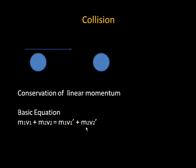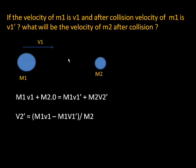Supposing v1' (v1 apostrophe) was the velocity of mass m1 after collision, and similarly v2' was the velocity of mass m2 after collision. What we write on the right side is m1·v1' plus m2·v2'.